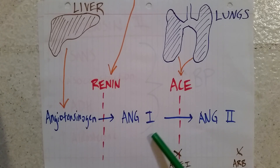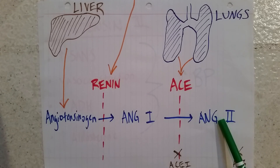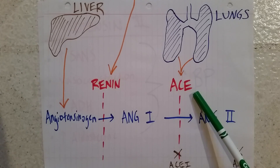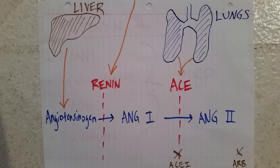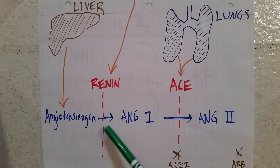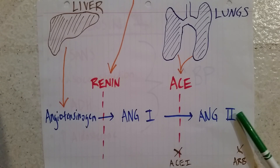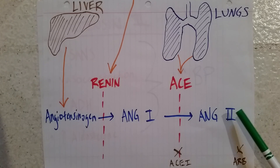Angiotensin 1 has some activity, but it's not the main active molecule. The main one is angiotensin 2. Angiotensin 1 gets converted to angiotensin 2 by angiotensin converting enzyme — also known as ACE — which is made by the lungs. So this is a multi-organ mechanism: it starts in the kidney with renin, moves to the liver with angiotensinogen, and finally uses ACE from the lungs to produce angiotensin 2, the active molecule that raises blood pressure.